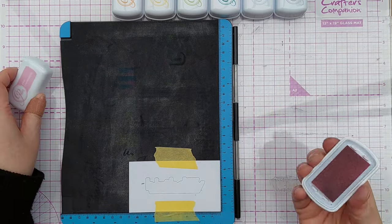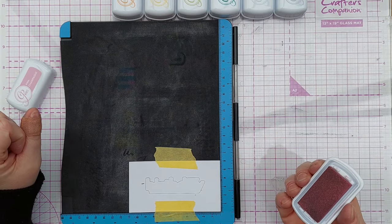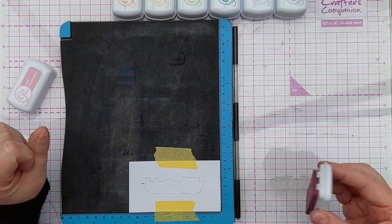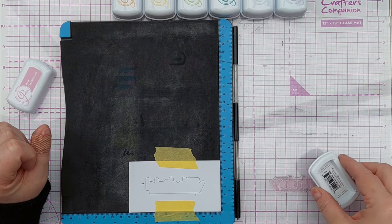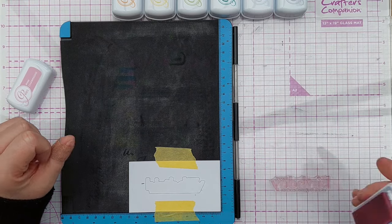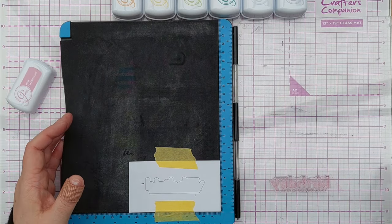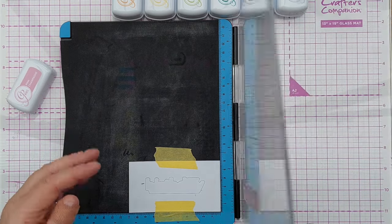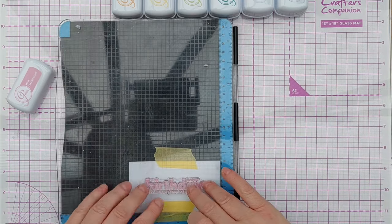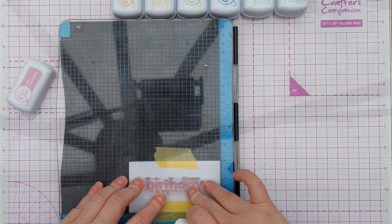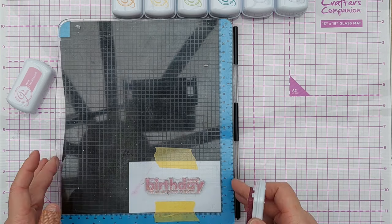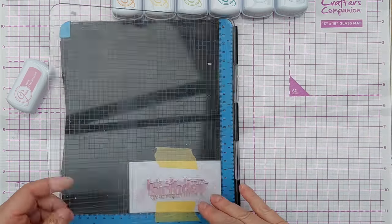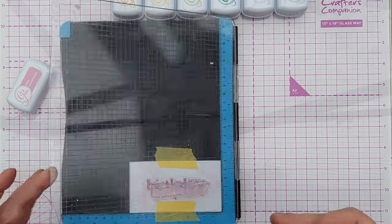And the reason I've chosen the Spa collection is because they're slightly muted colors. They're not as bright as the party collection which will bring color to my card but not grab focus from my main die cut. So I've inked that up, I'm going to hold that down for a few seconds and I'm going to give it a second going over. And that is that one done.